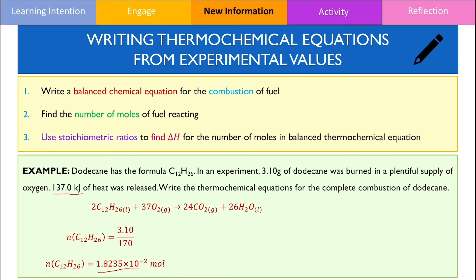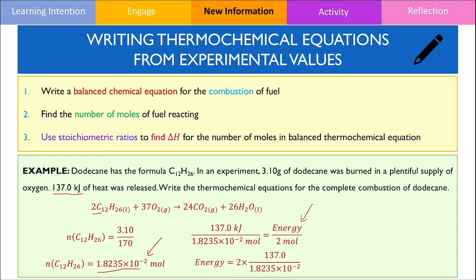This amount of moles releases 137 kilojoules of energy as stated by the question. To calculate the enthalpy, we need to take into consideration the stoichiometric amounts of dodecane in the equation. This means we need to find the energy released from 2 moles of dodecane. We can set up a ratio which relates the energy released with the moles and equate them together. Solving for energy by multiplying 2 to both sides gives an answer of 1.5 × 10⁴ kilojoules.